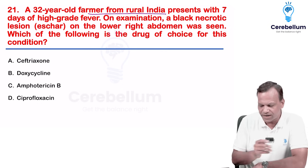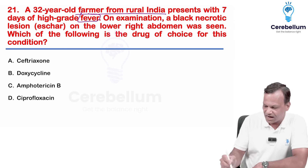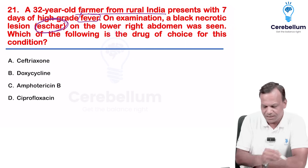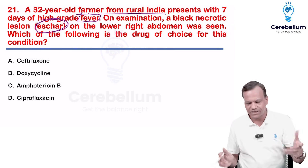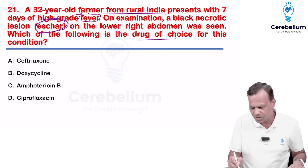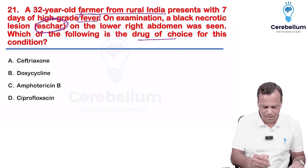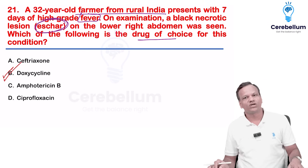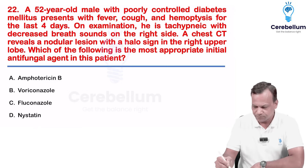A farmer from rural India presents with fever and an eschar — this indicates scrub typhus. The drug of choice for scrub typhus is doxycycline.